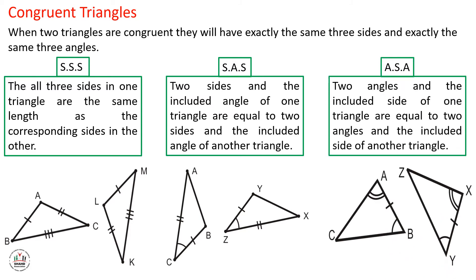The final case: Angle-Side-Angle. In this case, two angles and the included side of one triangle are equal to the two angles and the included side of another triangle. So this time we have two equal angles and one included side that must also be equal. Angle A equals angle X and angle B equals angle Y. The included side between these two angles must be equal also, so side AD equals side XY. In this case, these two triangles will be congruent by Angle-Side-Angle.